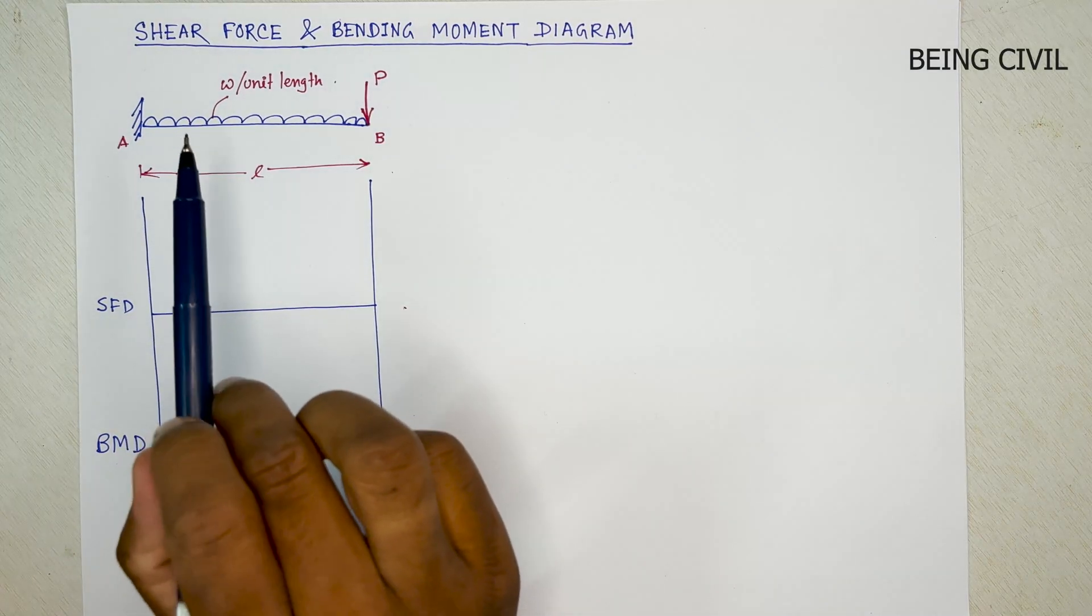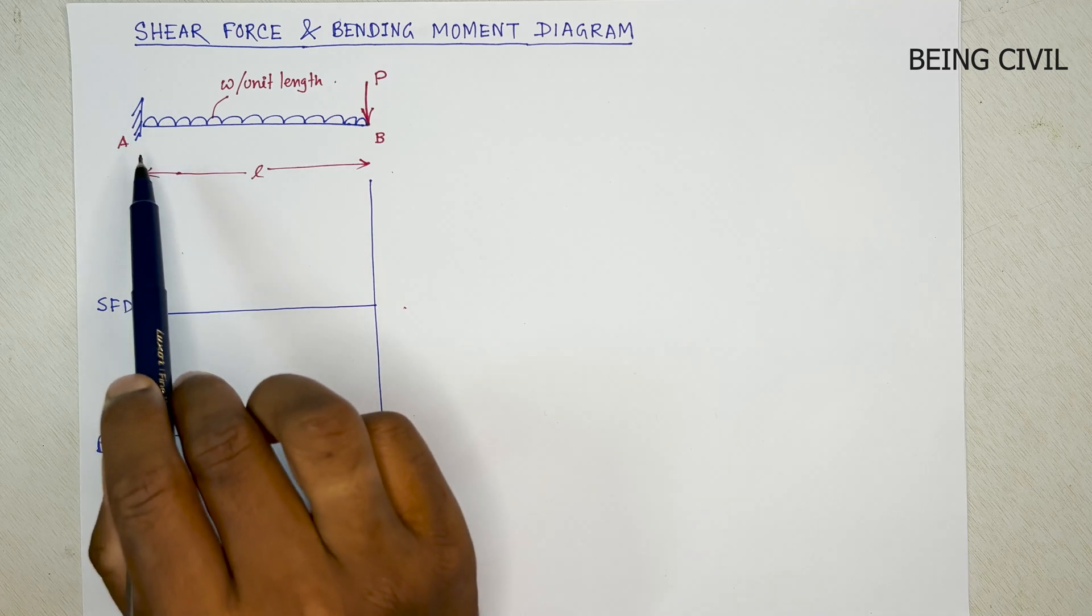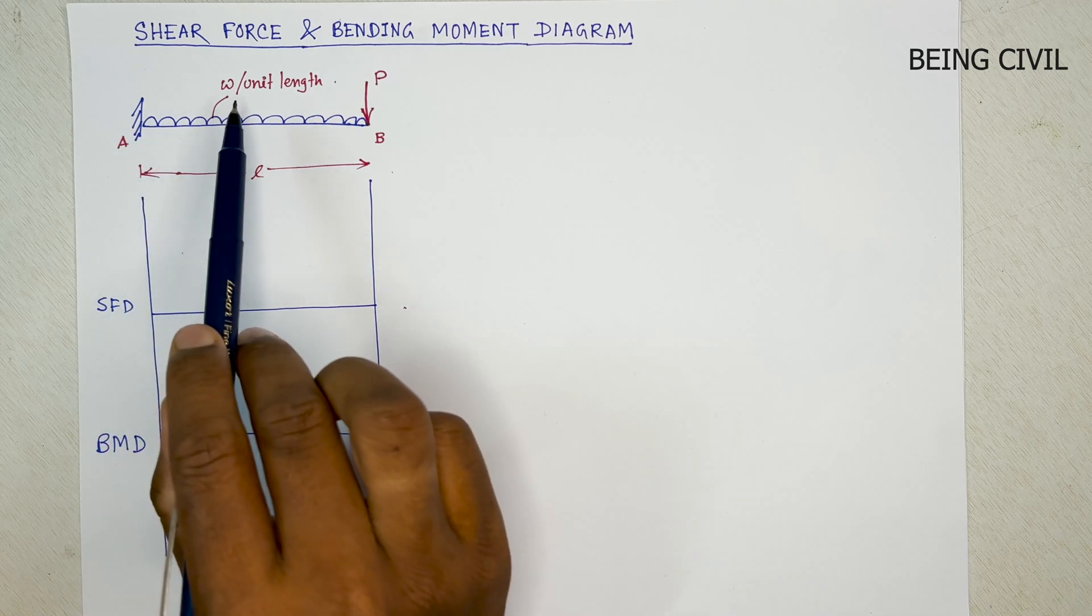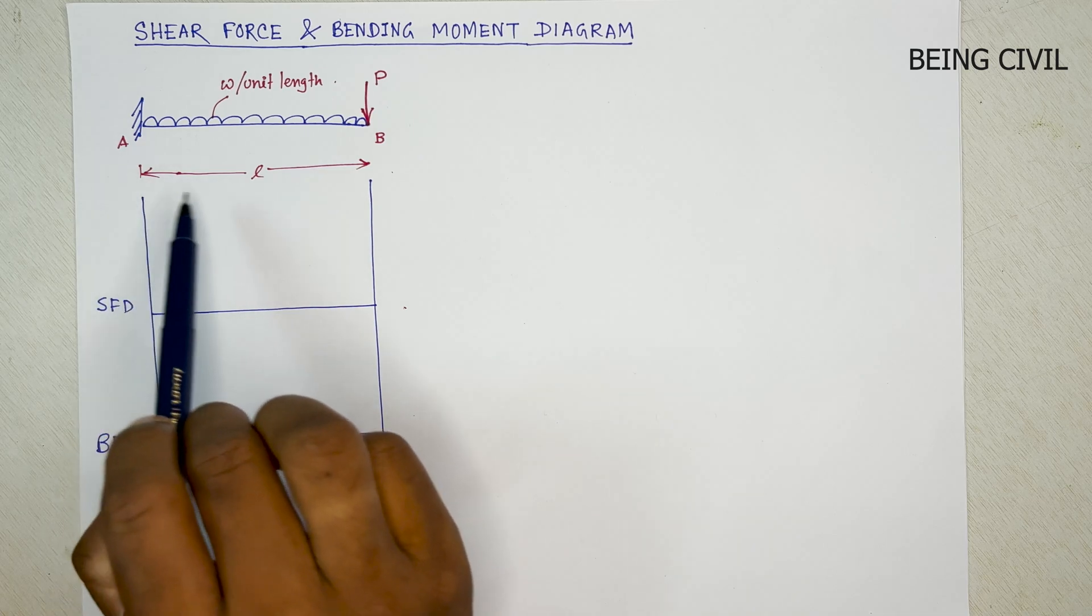Hello everybody, welcome to Being Civil. In this video, I will draw the shear force and bending moment diagram of a cantilever beam with UDL, W per unit length and a point load P at the free end. The length of the beam is L.